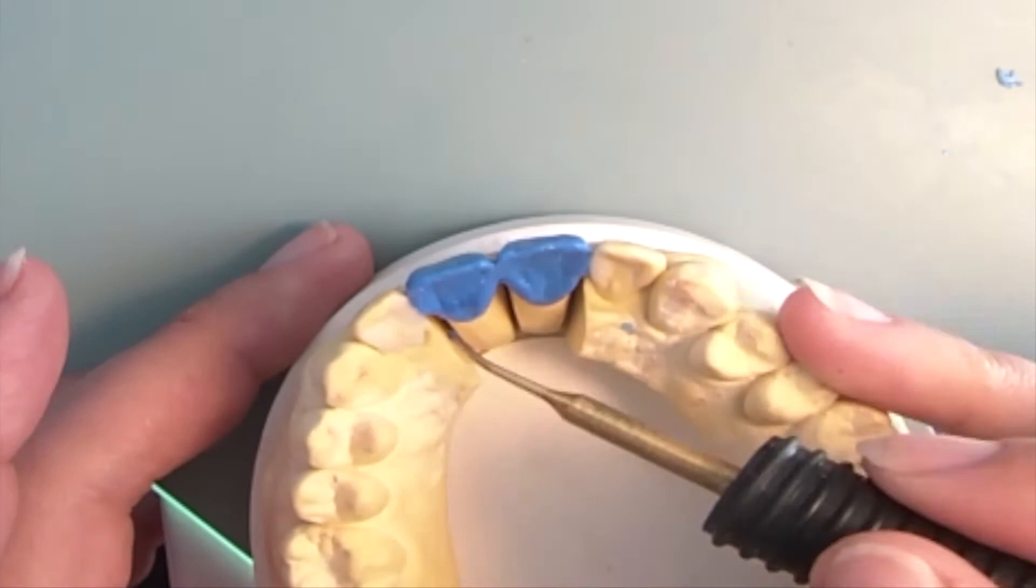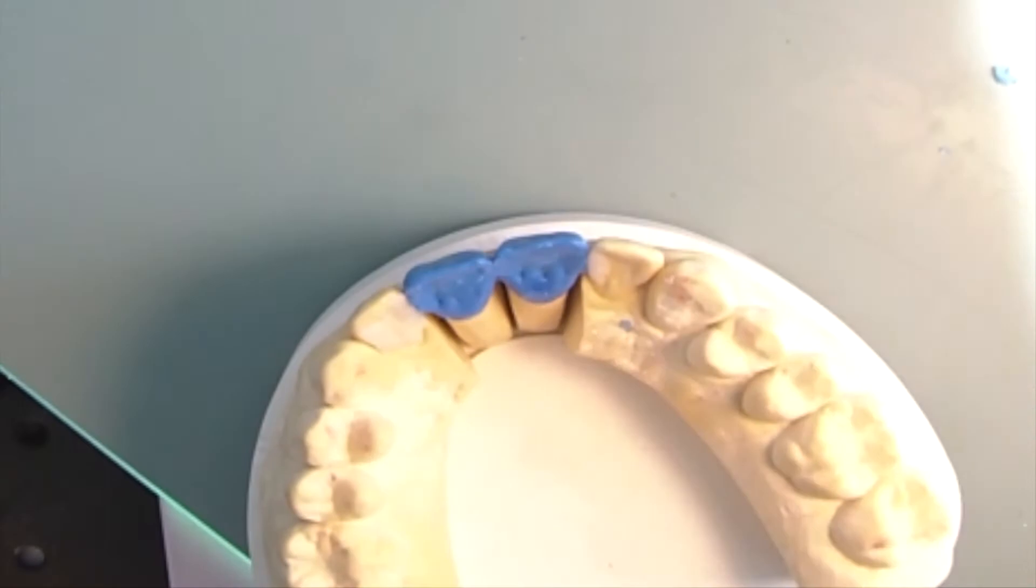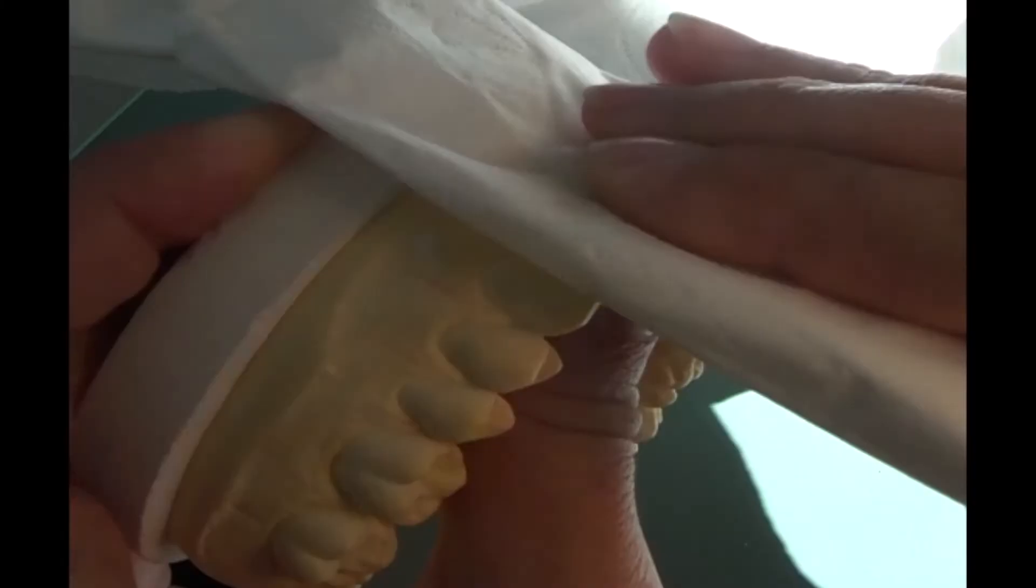Before we start with the finishing, I show you my trick for a smooth surface. I take a paper towel with oil and polish the surface.